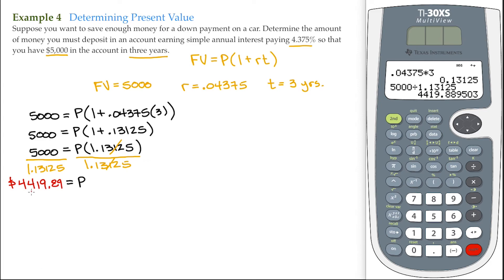So you must have $4,419.89 to deposit into an account that pays 4.375% annual interest for three years for it to get to be $5,000.